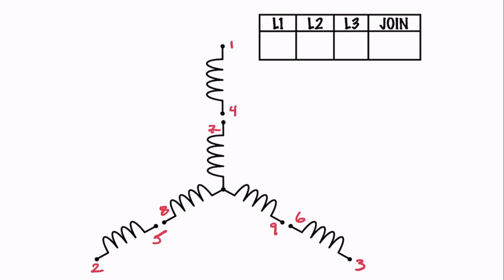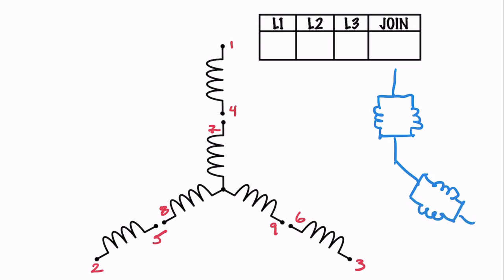What I like to do is have students draw it out since they're very familiar with how these loads work. We have one set of windings, and 120 degrees apart another set, and another 120 degrees away the third set. Starting at the top: I've got leads one and four for that winding, and I'm going to connect one to seven, then seven goes to the internal star point — the phantom lead. I'm not going to draw the 10, 11, 12 leads; I'll just leave those out.